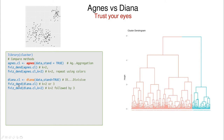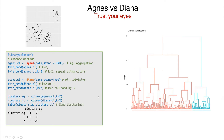Now let's try diana. Looking at the dendrogram, k could be two or maybe three, because the largest jump suggests two clusters, but the next jump suggests three. k equals four could also be a reasonable choice. If you cut both trees at that level and create a table comparing predictions of both methods, you see a one-to-one correspondence between the cluster names — so agreement is 100%.